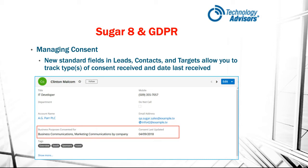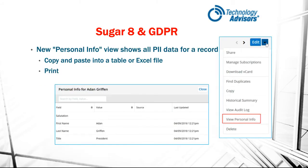Part of GDPR is also managing consent for being able to contact people. It's not just a blanket consent — you actually have to get consent for each specific topic. So you have to track what type of communications you have consent to send to a contact. Another thing to show is how to view the personal information — the PII data — for a contact within SUGAR. They've added a new view to the drop-down next to Edit where you can get that information.